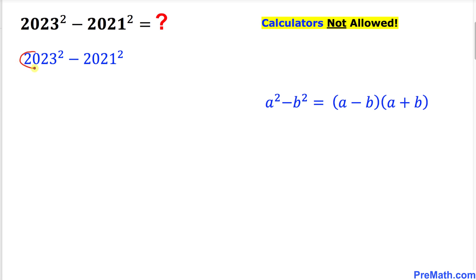If I call this part a and this part b, then this could be written as (2023 minus 2021) times (2023 plus 2021). Now this part is going to give us simply 2, and